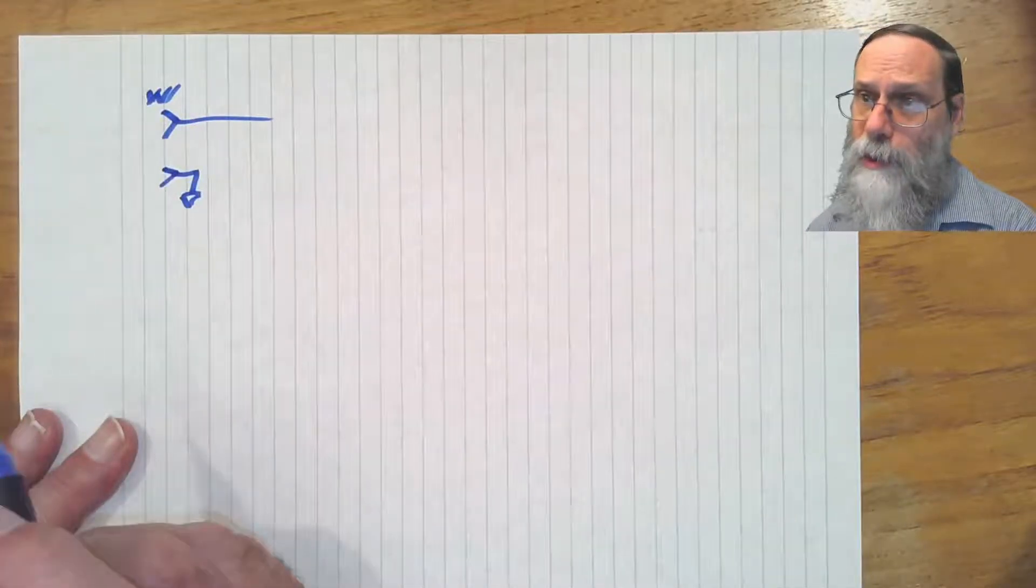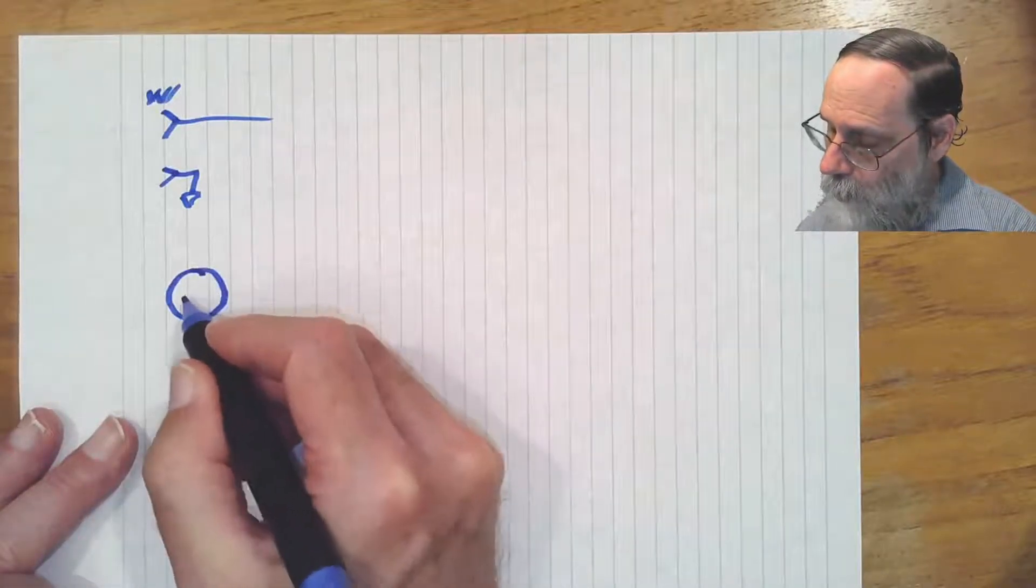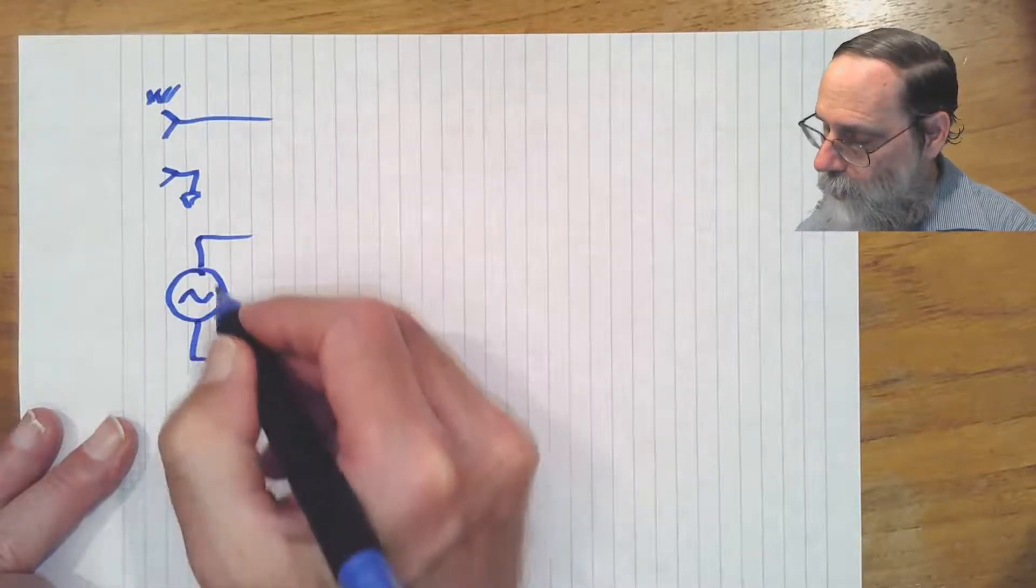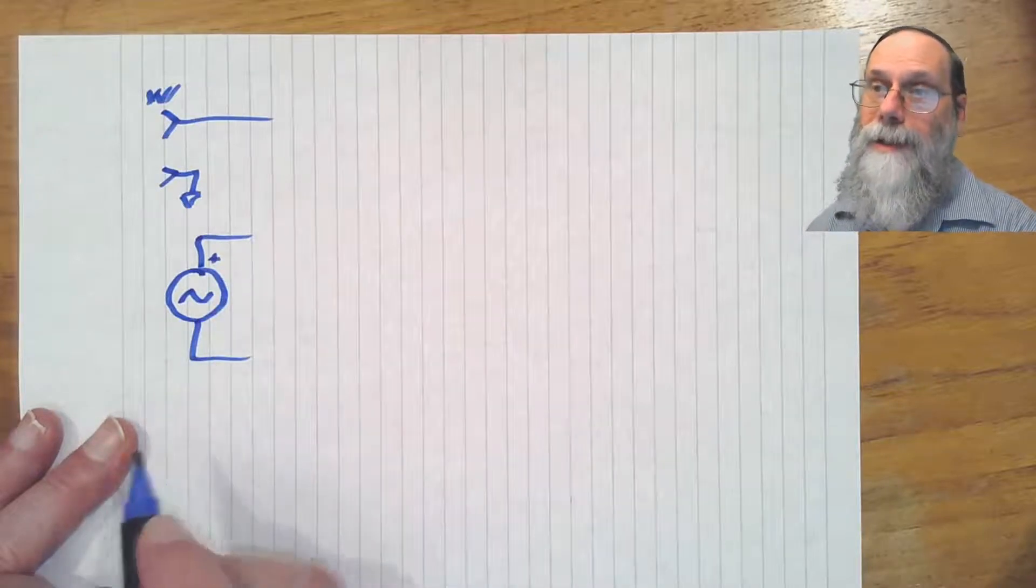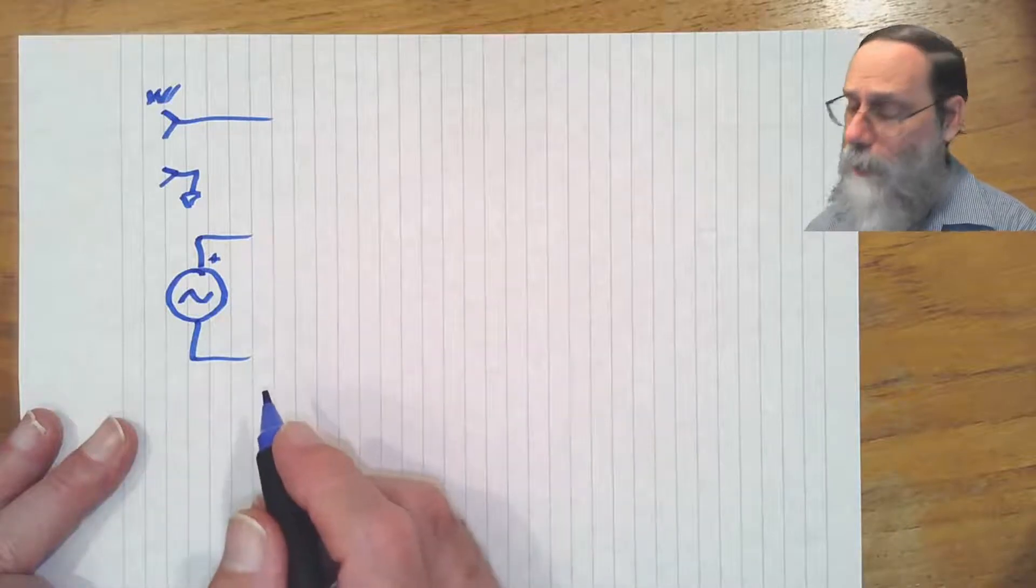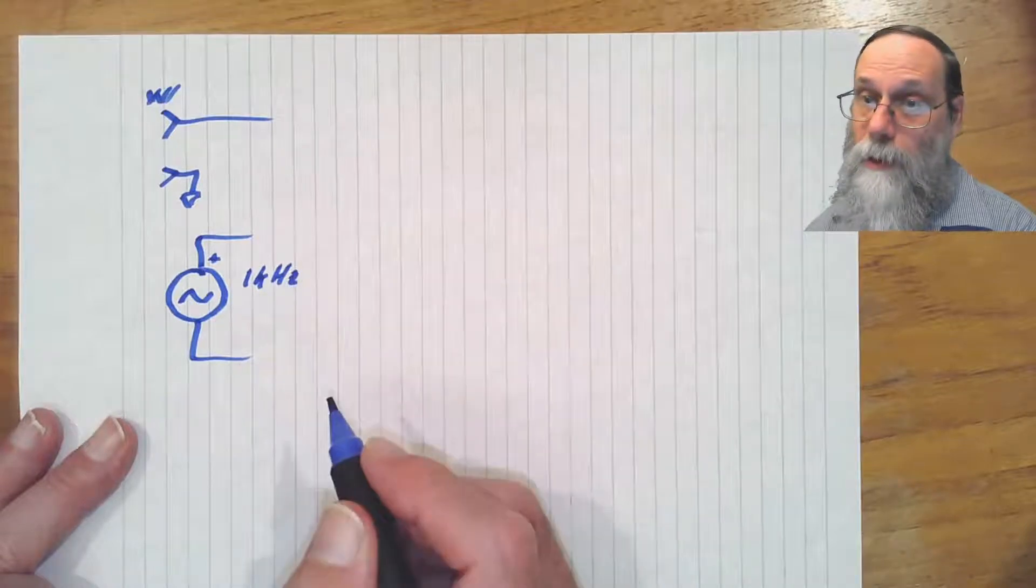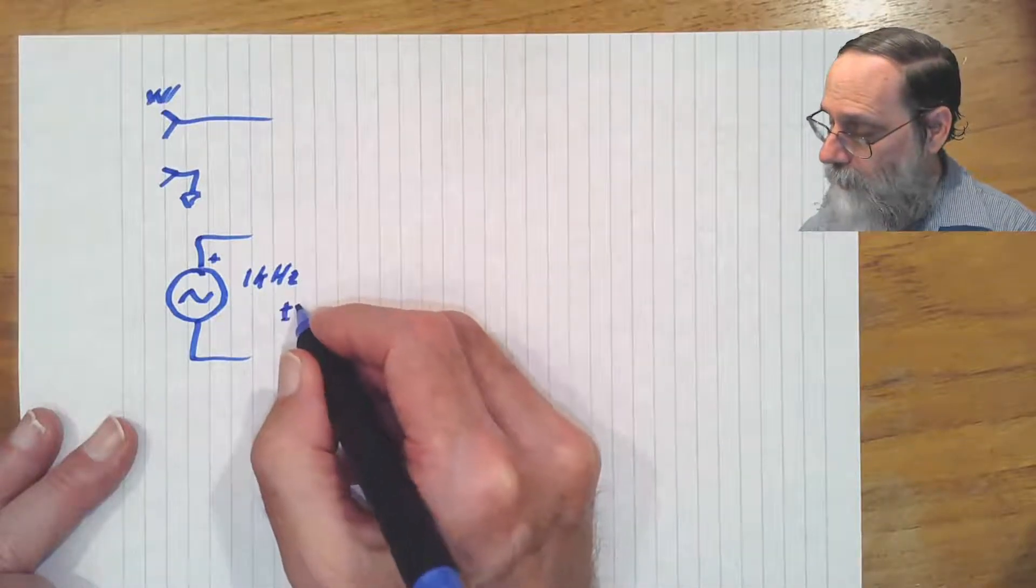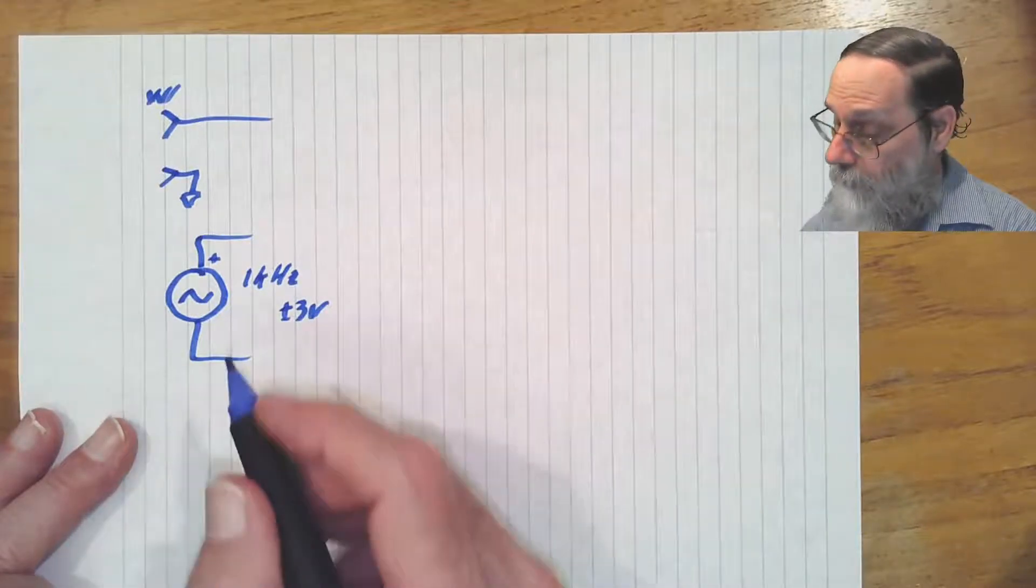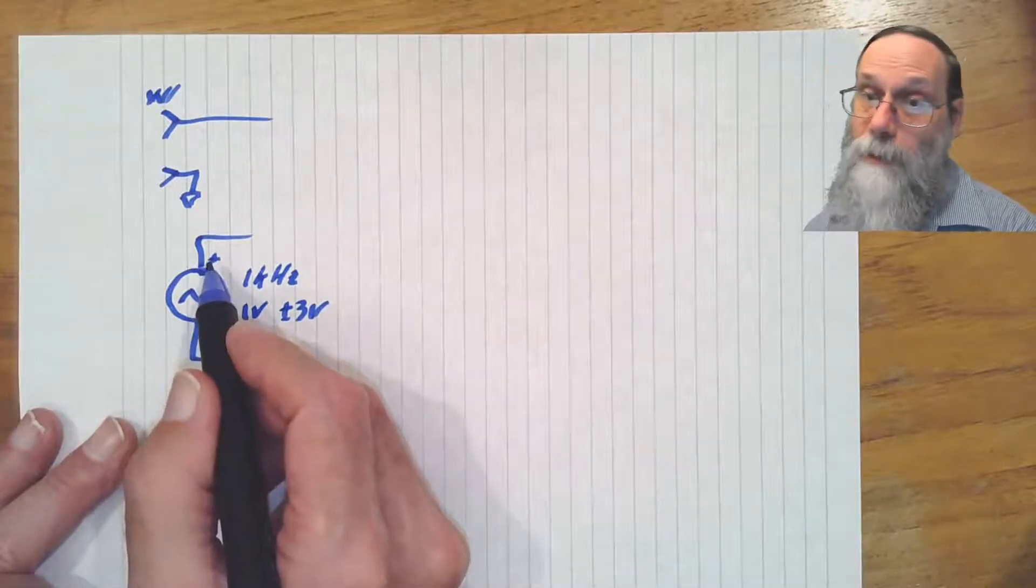But if you want to show the function generator in order to show a test setup or something like that, the usual symbol is a circle, sine wave in it, two ports, one of which is labeled plus to indicate the actual output port. Then this will often have a label with it, like frequency, say one kilohertz, or it might have plus or minus three volts to give the amplitude. There may be a DC offset, one volt plus or minus three volts. And when you have that DC offset, then this plus sign becomes very important.